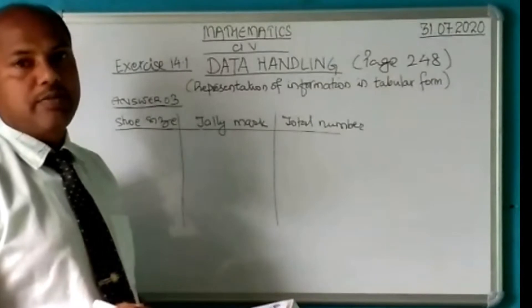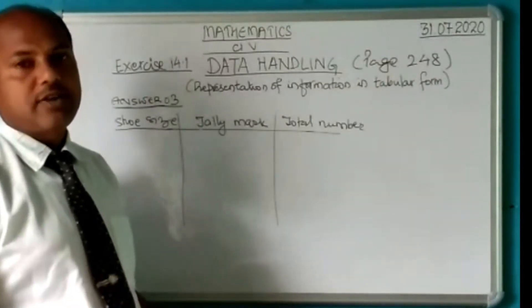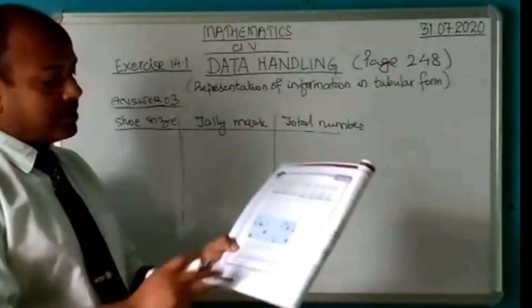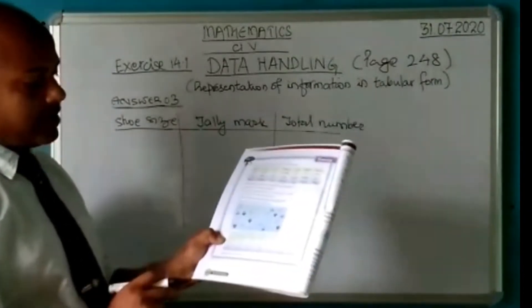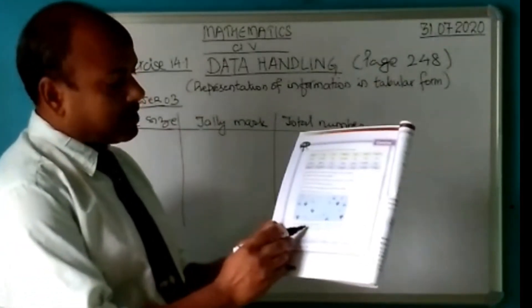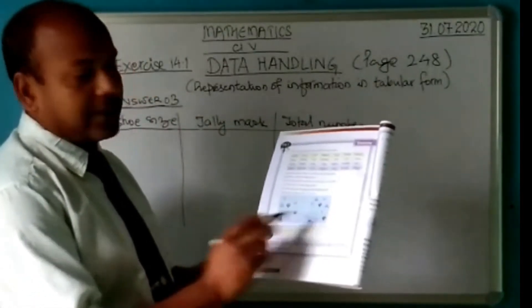Welcome back to question number 3. In this video we shall solve question number 3 and 4. Now dear children, look at question number 3 — you have got the shoe size of 28 students in the class as follows.